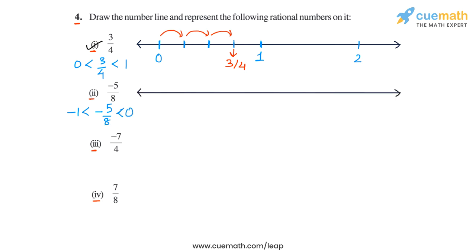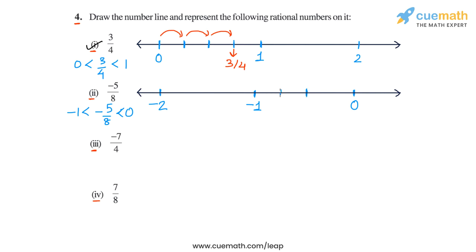Let's draw a number line and make integer markings on it, just like we did in the previous part. So let's say this is minus 2, this is minus 1, and this is 0. Minus 5 by 8 will lie in the interval between minus 1 and 0. To plot minus 5 by 8, let's divide this interval into eight equal parts. To do this accurately, first divide the interval into two equal parts by plotting the midpoint of minus 1 and 0, then divide each half into two equal parts again.